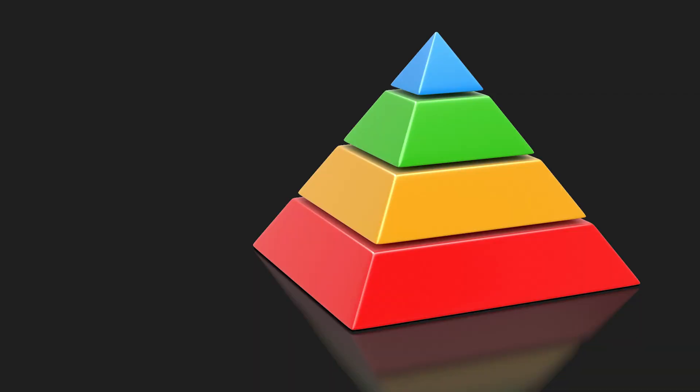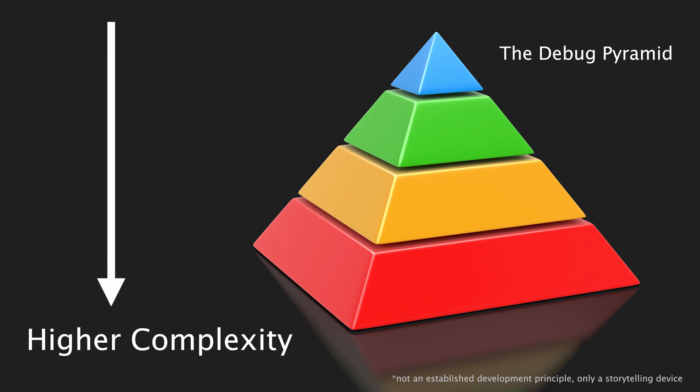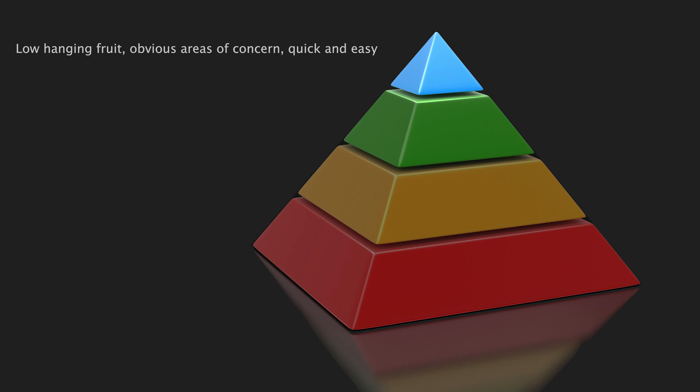I started to debug by tackling the low-hanging fruit — the obvious, quick checks you do hoping for a big result with minimal effort. There's no exception pointing you to the issue, so the problem is nebulous. I think with something like this it made sense to start at the top of what I'm calling the debug pyramid and work your way down through more complex issues, trying to narrow down where the bug is coming from.